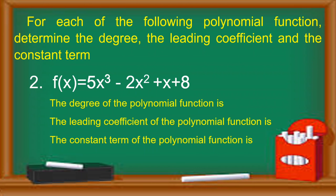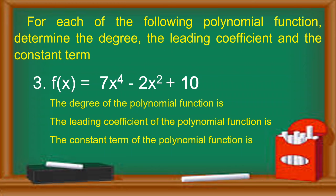Second example: f of x equals 5x to the third minus 2x squared plus x plus 8. The highest exponent is 3, so the degree is 3. The leading coefficient is 5, and the constant term is 8. Third example: f of x equals 7x to the fourth minus 2x squared plus 10. The highest exponent is 4, so the degree is 4. The leading coefficient is 7, and the constant term is 10.